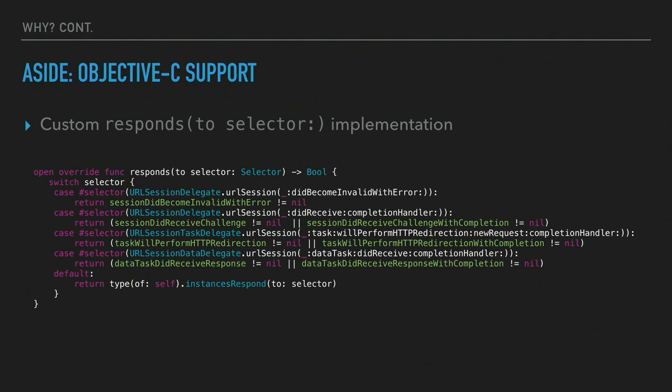As an example, one of the things at the fundamental core of the library was this custom respondToSelector implementation — mainly so we could offer closures to override features, but if you didn't set a closure, we could tell the delegate dynamically that we don't respond to that selector, so URL session would do whatever its default behavior was. Unfortunately, this entire bit of code was completely unusable from Linux, so things like this created a lot of friction when we wanted to port over.